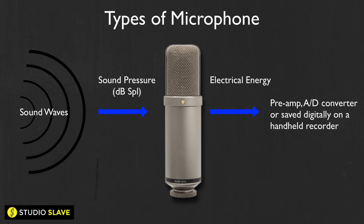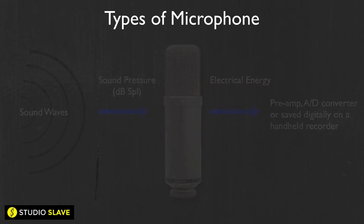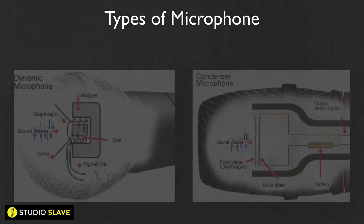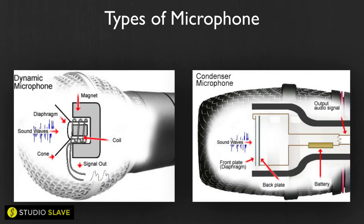A microphone does that using a little diaphragm, which is essentially just a small piece of metal — think of it like a little plate that moves back and forth. When the sound pressure hits it, it gives it room to move, and as it moves back and forth that's transduced into electrical energy which we can then read.